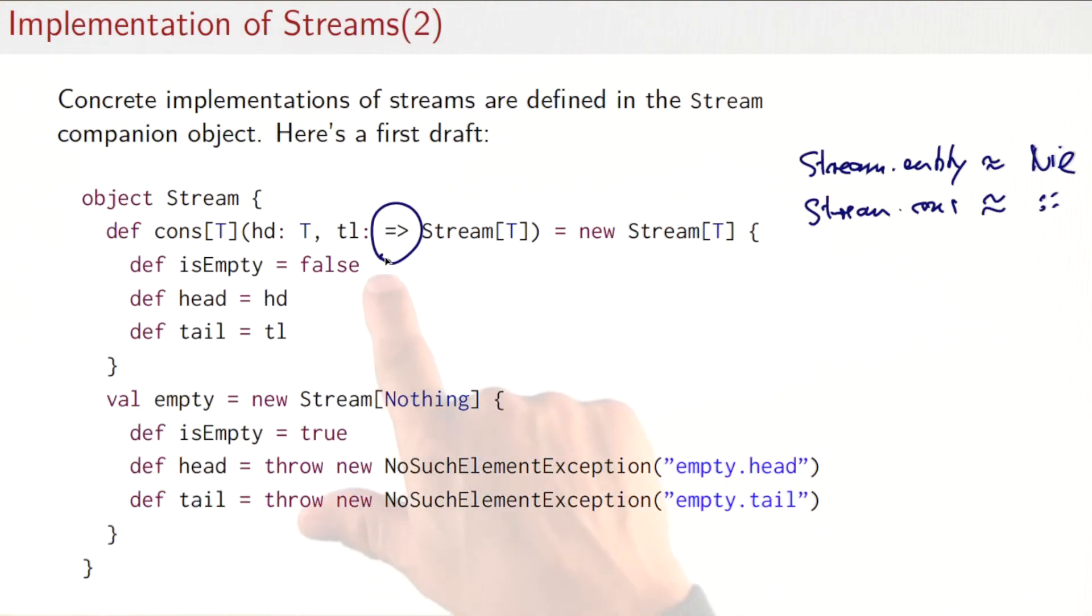So because tail is a call by name parameter, it means that when I first construct a cons cell for a stream, the tail is not evaluated. It will be evaluated the first time somebody dereferences the name tail and that's here. So that if somebody calls a tail method, the tail parameter will be dereferenced and the rest of the stream will be evaluated.